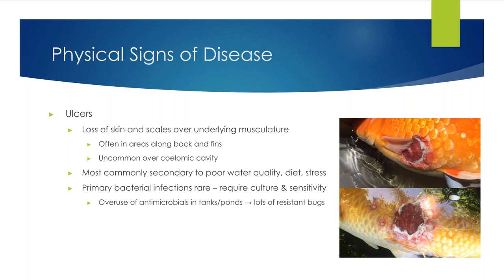This overuse of antimicrobials in tanks and ponds has resulted in a lot of resistant bacteria. As a veterinarian, if we are trying to treat a primary bacterial infection, we need to take a culture and sensitivity in order to make sure we're treating appropriately. These two fish on the right came from the same pond, and as you can see, those ulcers are significantly large. This likely started secondary to just one little scale — this pond has had parasitic problems, and with the itching and scratching they created a hole where bacteria were able to take root. This turned out to be a resistant Aeromonas species requiring heavy-duty antibiotics.